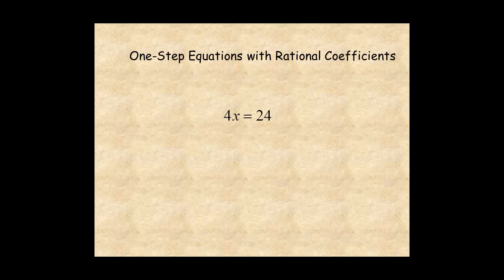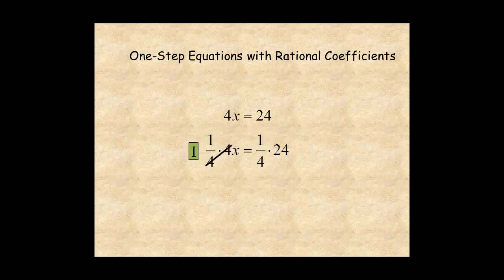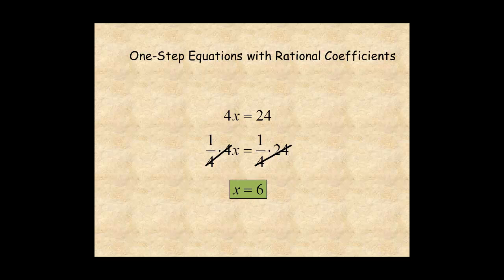An equation with whole number coefficients can also be solved with inverses. For this example, multiply both sides of the equation by 1 over 4 — the inverse of 4. On the left, 1 over 4 times 4 equals 1, and you get 1 times x, which is just x. On the right, 24 divided by 4 equals 6. The solution is x equals 6. Don't forget to check the solution.